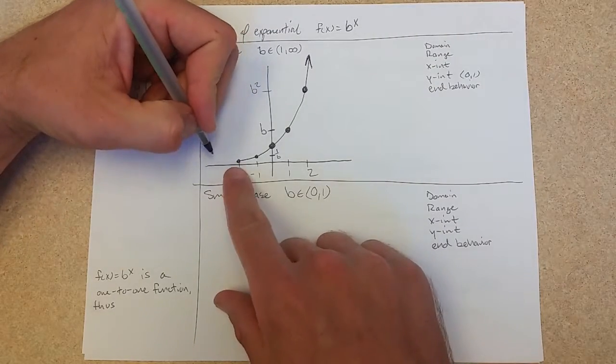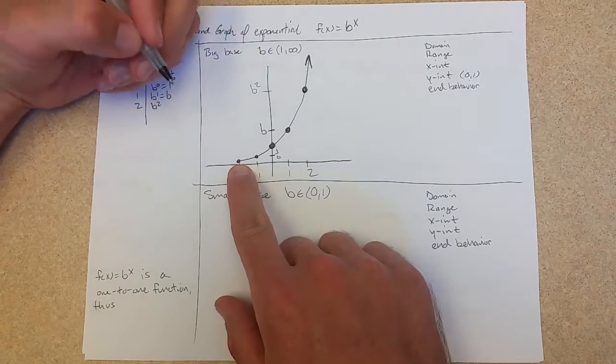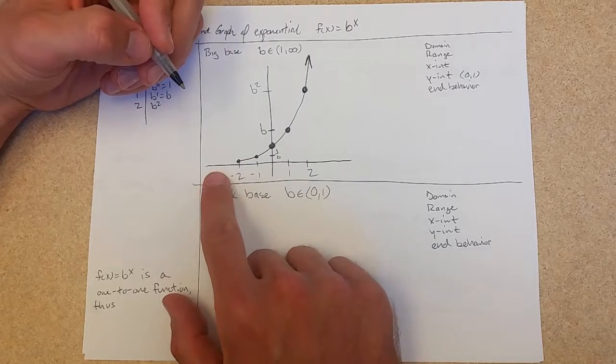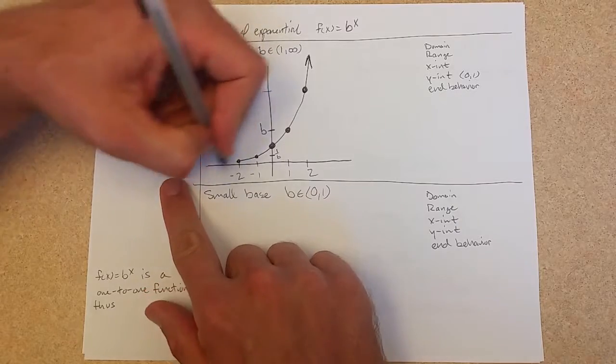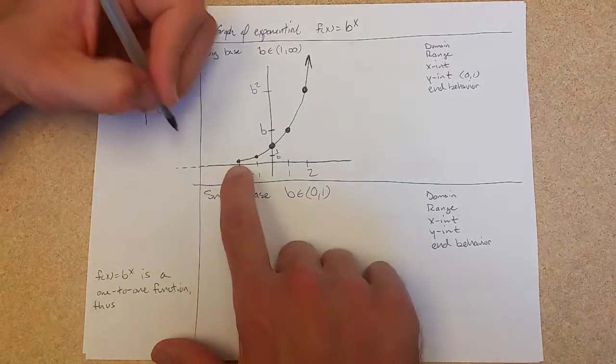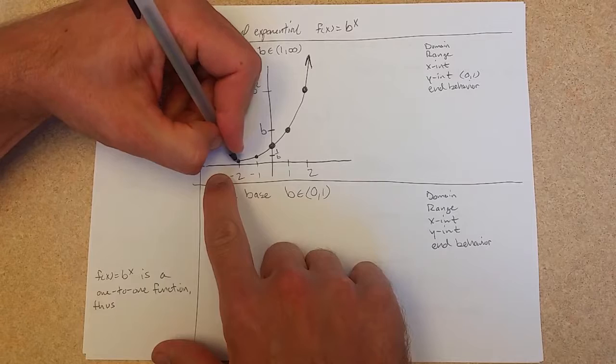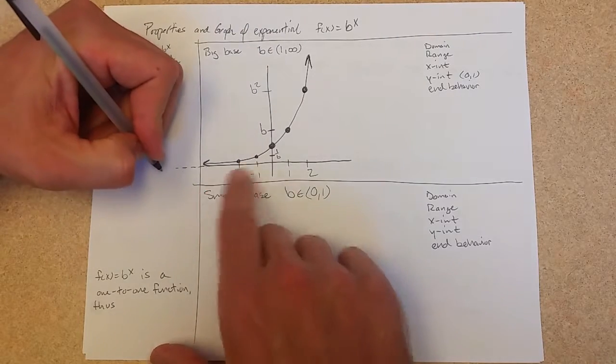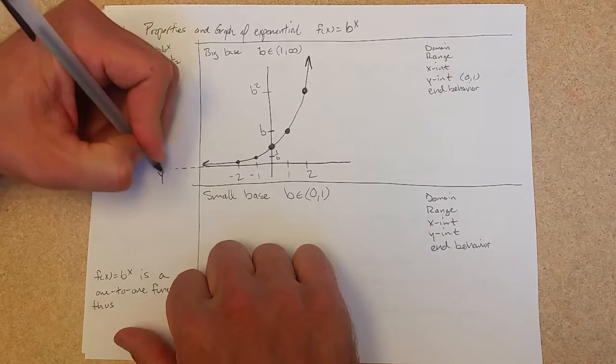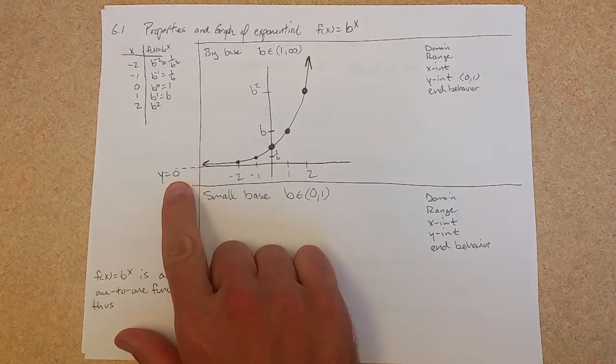What happens over here on the left? Well, if b is 2, this would be a quarter. And if I went to negative 3, I'd have an 8th, 16th, 32nd. It gets very, very small, but it will never actually cross the x-axis. It will be a very small fraction getting smaller, but it will never cross the x-axis.